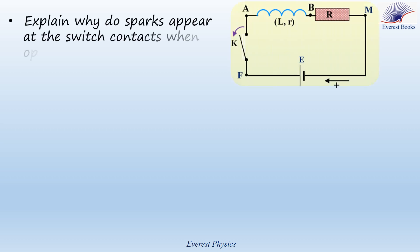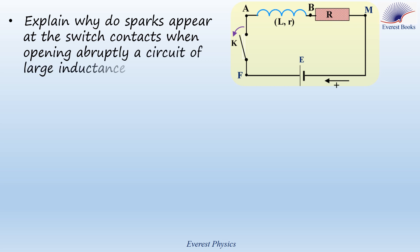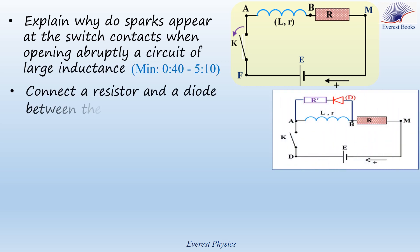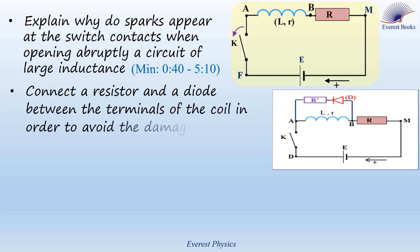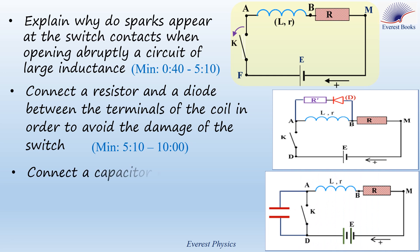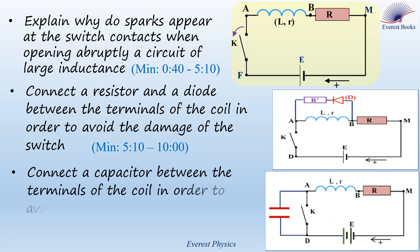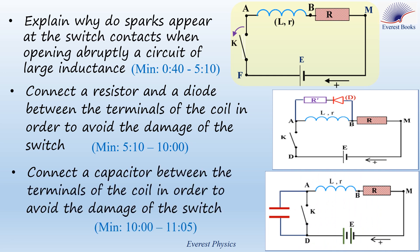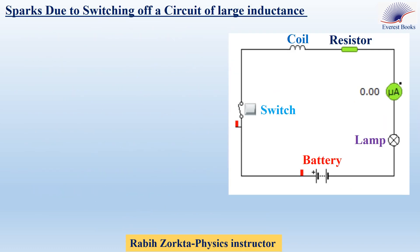We are going to explain why sparks appear at the switch contacts when opening abruptly a circuit of large inductance. We will also explain how to connect a resistor and a diode, or a capacitor, between the terminals of the coil in order to avoid the damage of the switch.